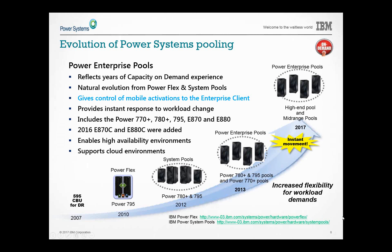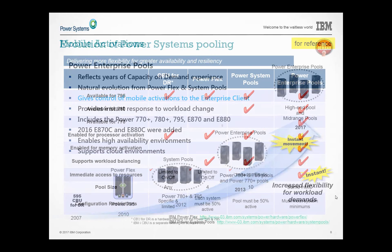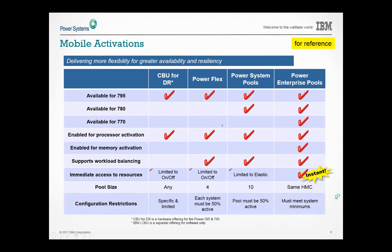The next chart shows the evolution between offerings — the CBU for DR, then PowerFlex, then system pools, and then enterprise pools. It looks like PowerPoint just died on me, so I may need to restart it. The next slide compares these different offerings across those generations.